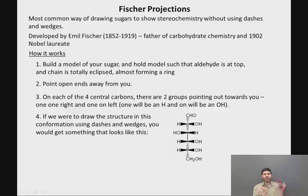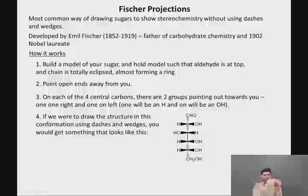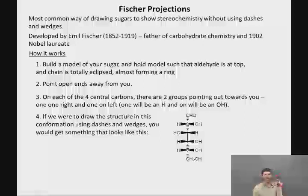So if we were to draw the structure in this conformation using dashes and wedges, you would get something like what's shown on the screen. On carbon 2, we've got an H and an OH coming towards you. On carbon 3, we've got the OH on the left and the H on the right. The carbon-carbon bonds are given dashes because they're pointing away from you, and the H's and OH's are given wedges because they're pointing towards you.